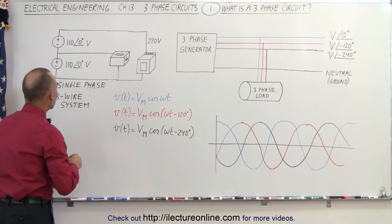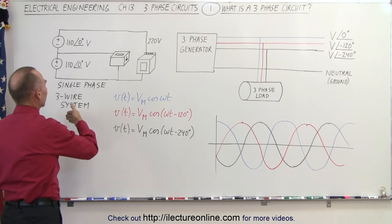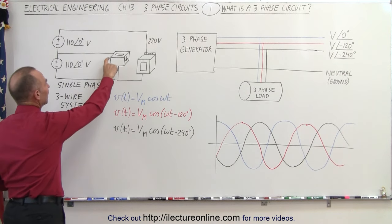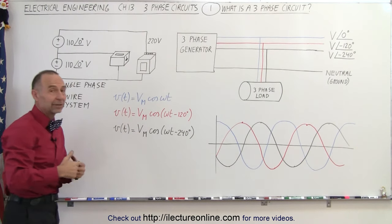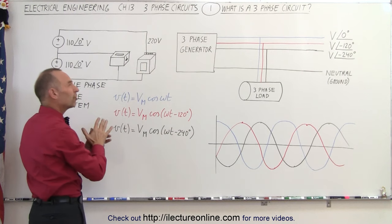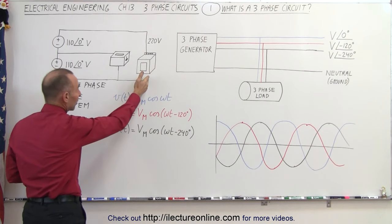And what that allows you to do is provide power and current to devices that need 110 volts and to devices that need 220 volts, like electric stoves or electric dryers. Washers don't need 220.